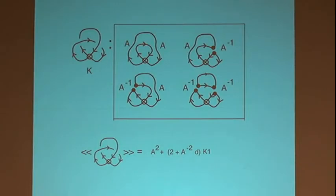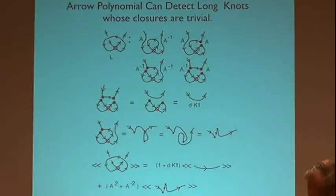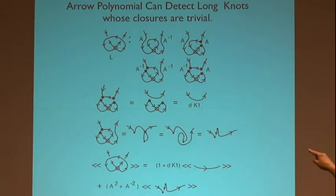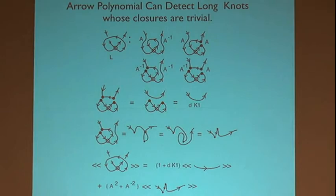Here's an example of calculating the arrow polynomial — one of the states picks up a zigzagging loop and so you end up with a K in the result. I also put in an example about long knots: here's a long virtual knot. If you close it, the closure is trivial because a Reidemeister 2 move pulls it in and it goes away. But as a long knot it's non-trivial. This is a phenomenon about virtual knots that doesn't happen with classical knots: you can have a long knot that's non-trivial, and when you close it, it becomes trivial.